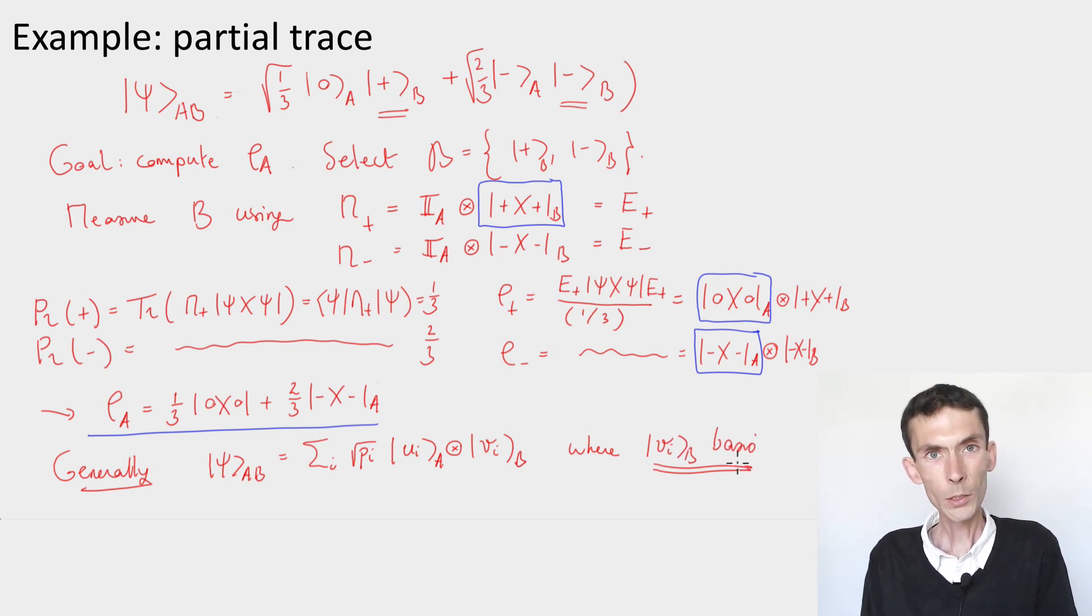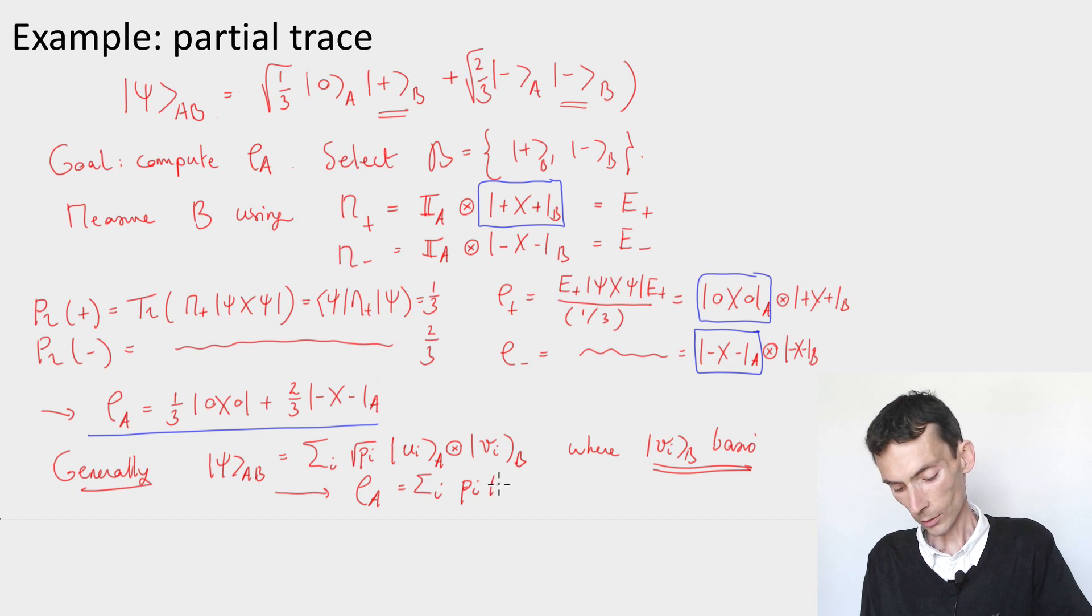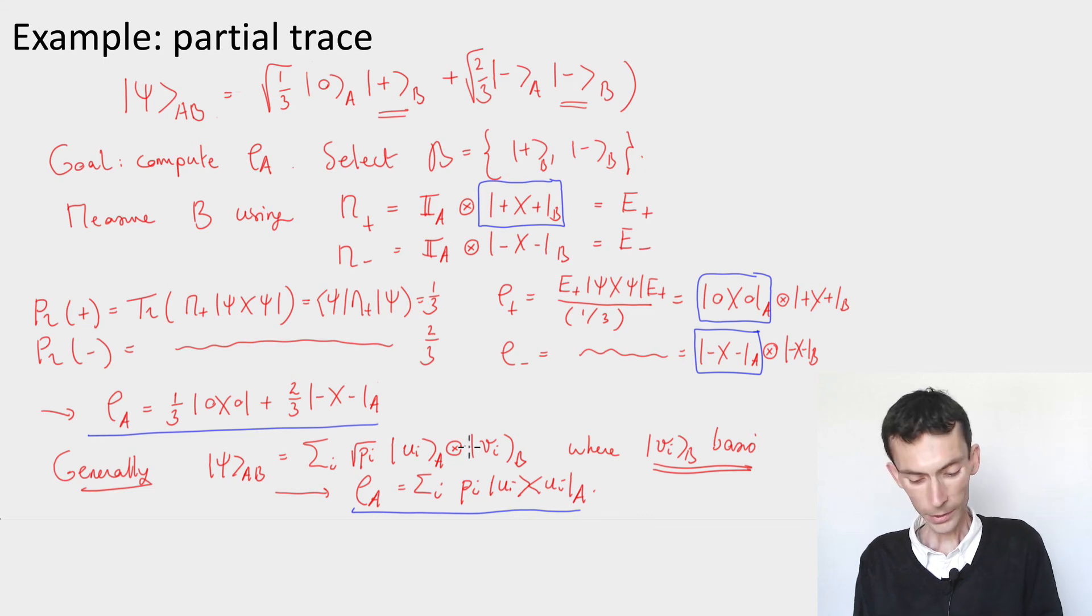we now have a recipe for the reduced density. We'll use that basis to measure B system, and you see from the previous example that the reduced density on A will simply be given by sum over i of the squares of these coefficients here, pi, times the corresponding state on Alice, on A, which is ui. So this works in general, as long as we have a decomposition like this, where the v's are a basis for B.